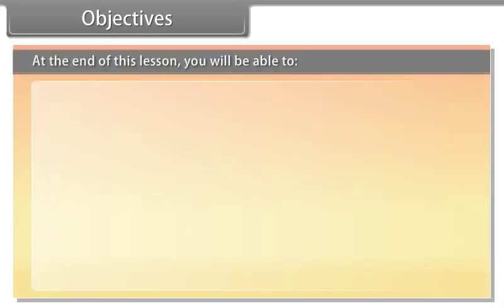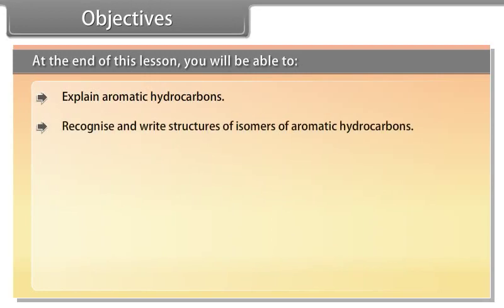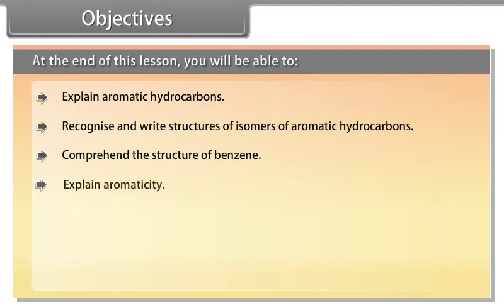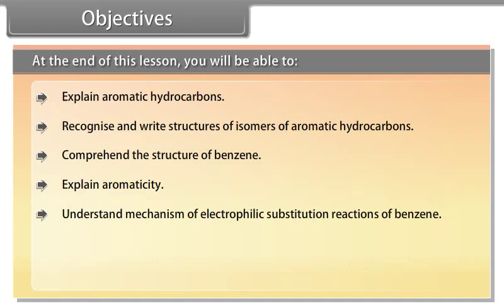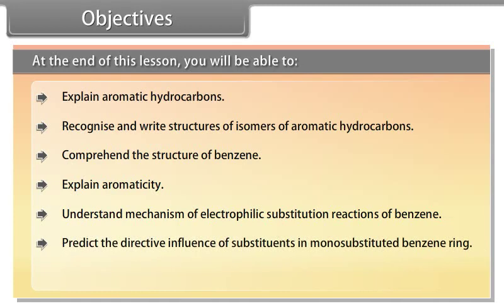Objectives. At the end of this lesson, you will be able to explain aromatic hydrocarbons, recognize and write structures of isomers, comprehend the structure of benzene, explain aromaticity, understand mechanism of electrophilic substitution reactions, predict the directive influence of substituents in monosubstituted benzene ring, and learn about carcinogenicity and toxicity.